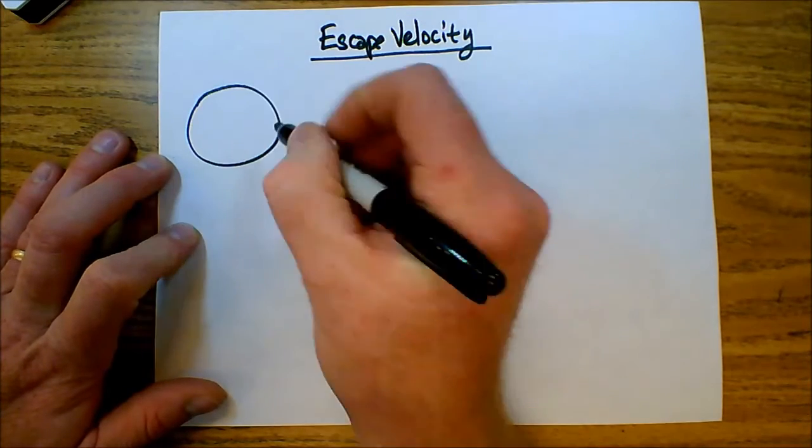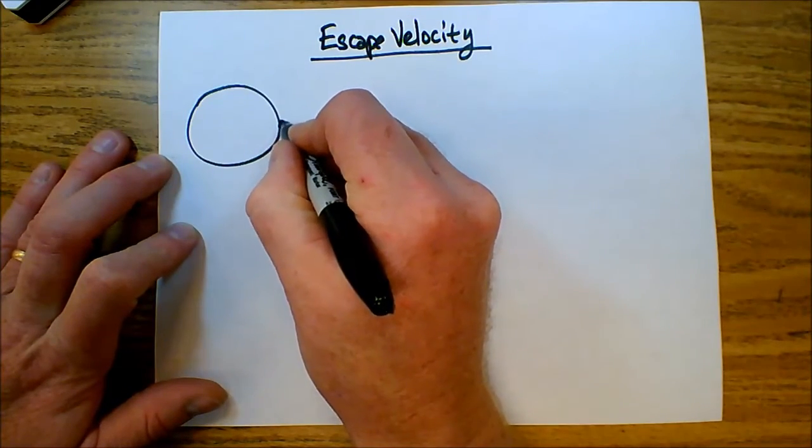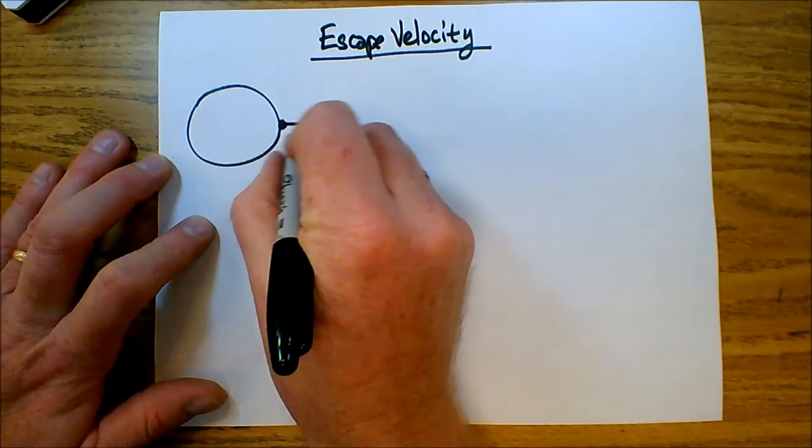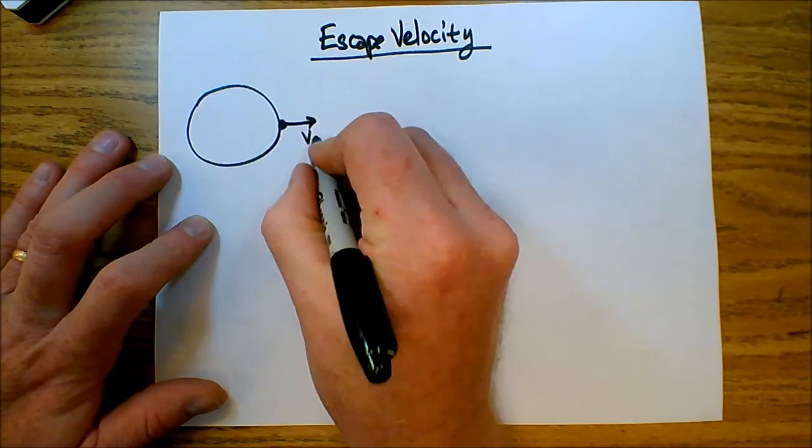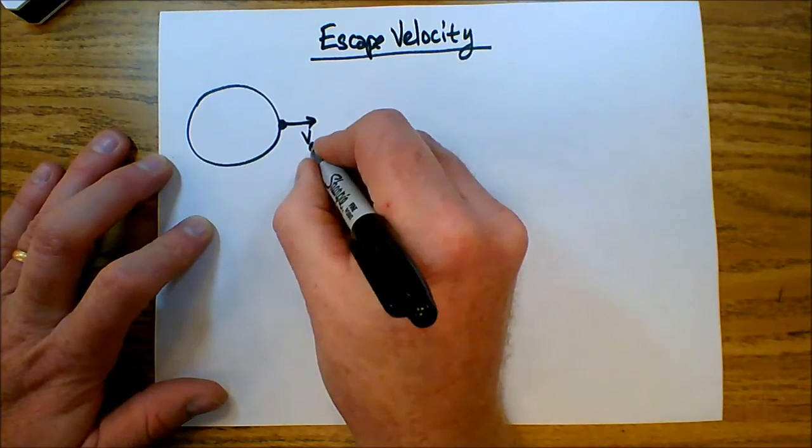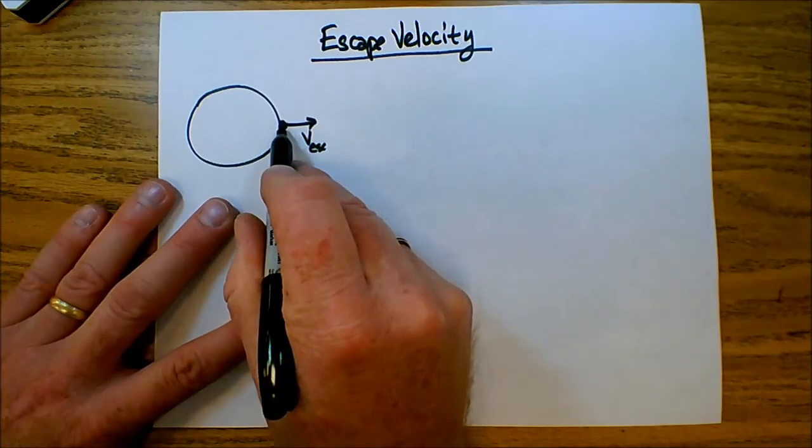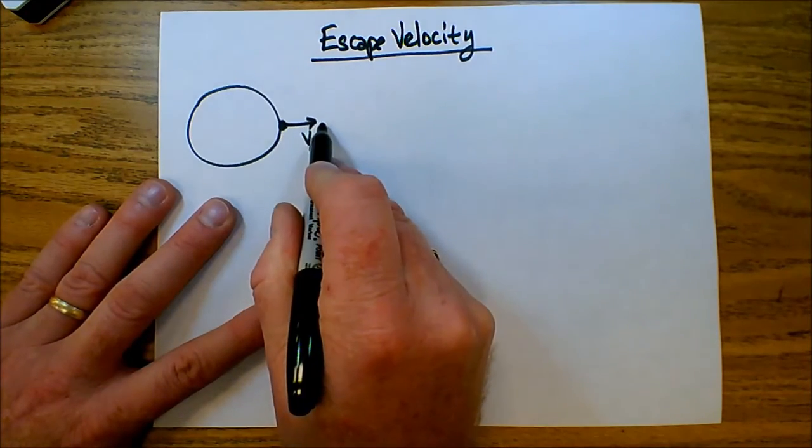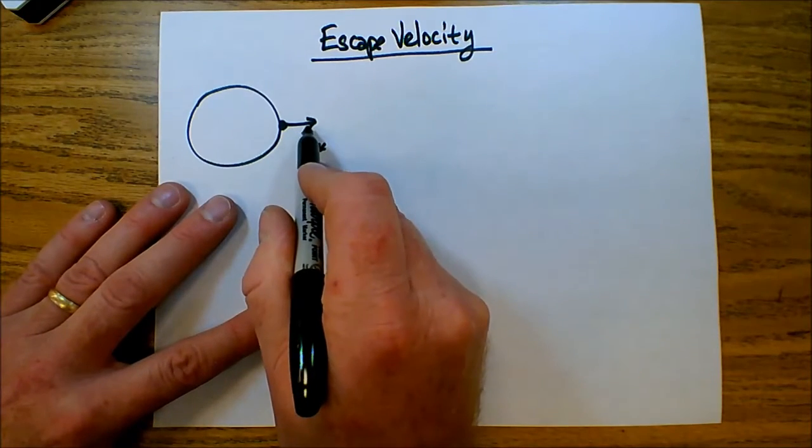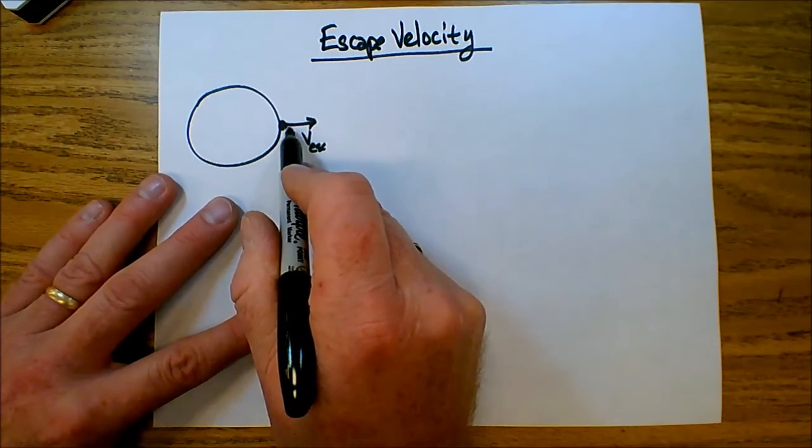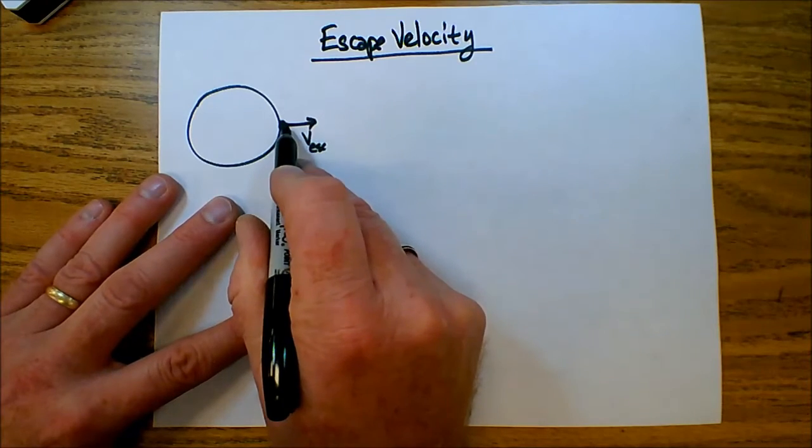What that means is, so if I have a planet here, and I have an object here, and it's moving with just enough velocity. We'll call that V escape. So what's going to happen here, it has just enough. So as it moves away, of course gravity is going to be pulling back on it. It's going to be converting kinetic energy into gravitational energy. Well, if the velocity is fast enough,